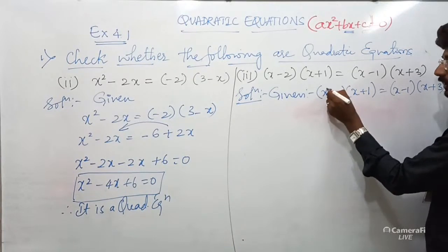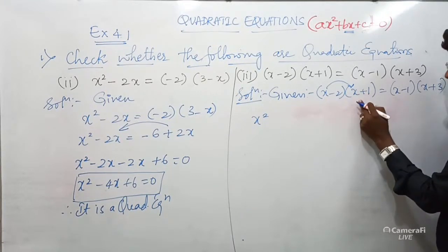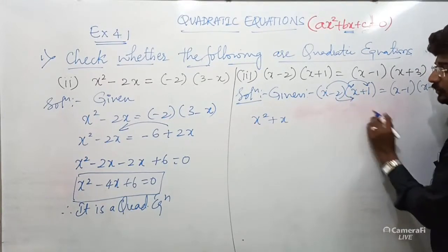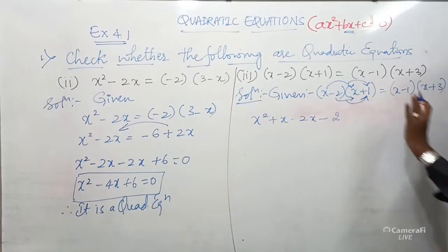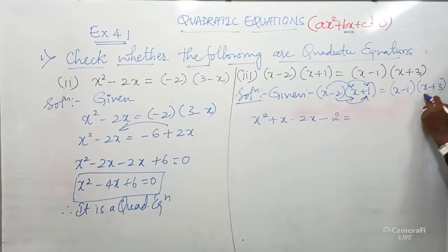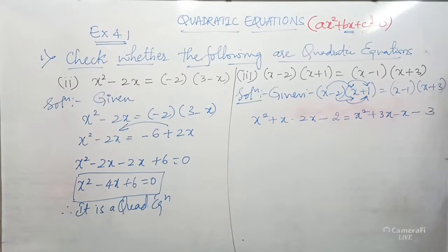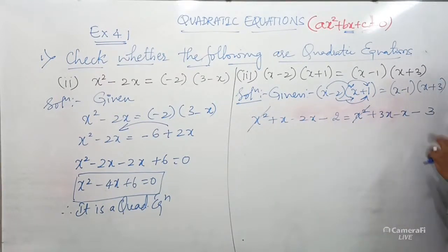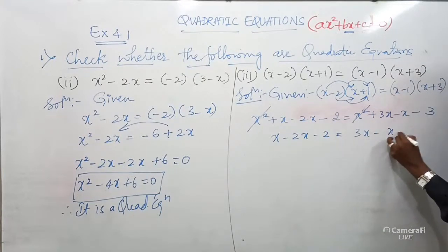Multiply the bracket terms. LHS: X·X = X²; X·1 = X; −2·X = −2X; −2·1 = −2. RHS: X·X = X²; X·3 = +3X; −1·X = −X; −1·3 = −3. On both LHS and RHS there is an X² term — since the sign and variable are the same, X² cancels from both sides.